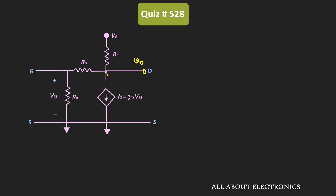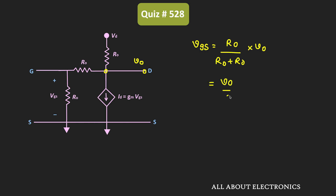Applying the voltage divider rule between the two resistors at the gate node, we can say that vgs equals r0 divided by (r0 plus r0) times v0, which simplifies to v0 divided by 2. Therefore, the voltage vgs is equal to v0 divided by 2.